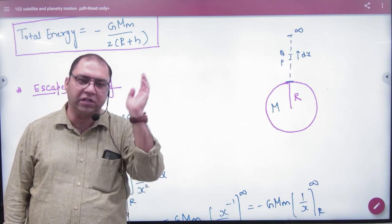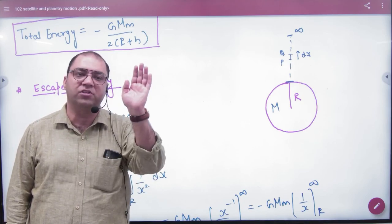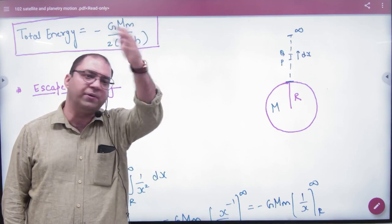So, to cross the gravitational pull, you have to go to an infinite distance. You don't know where you will get the body. You will never get the body. Infinity.